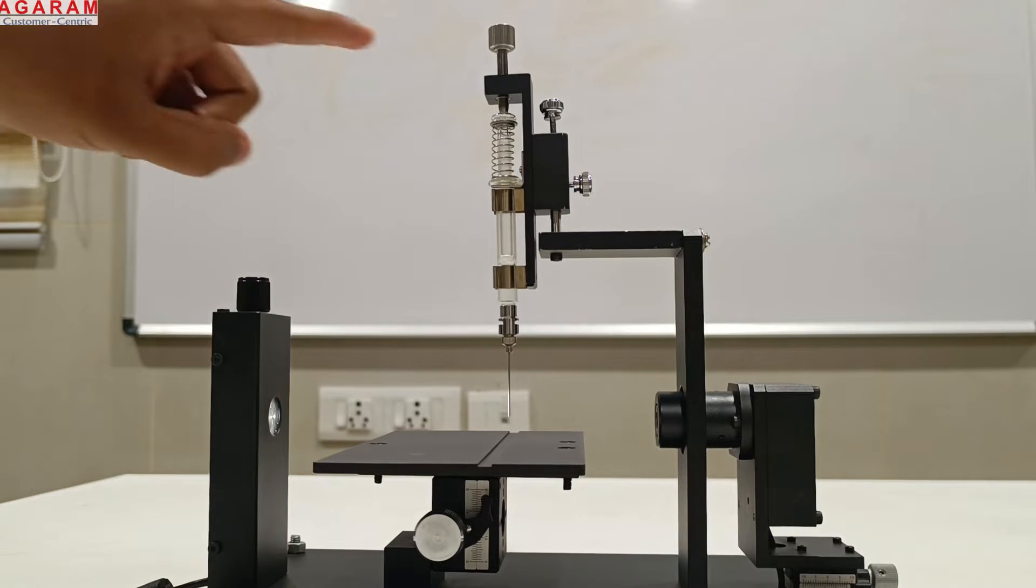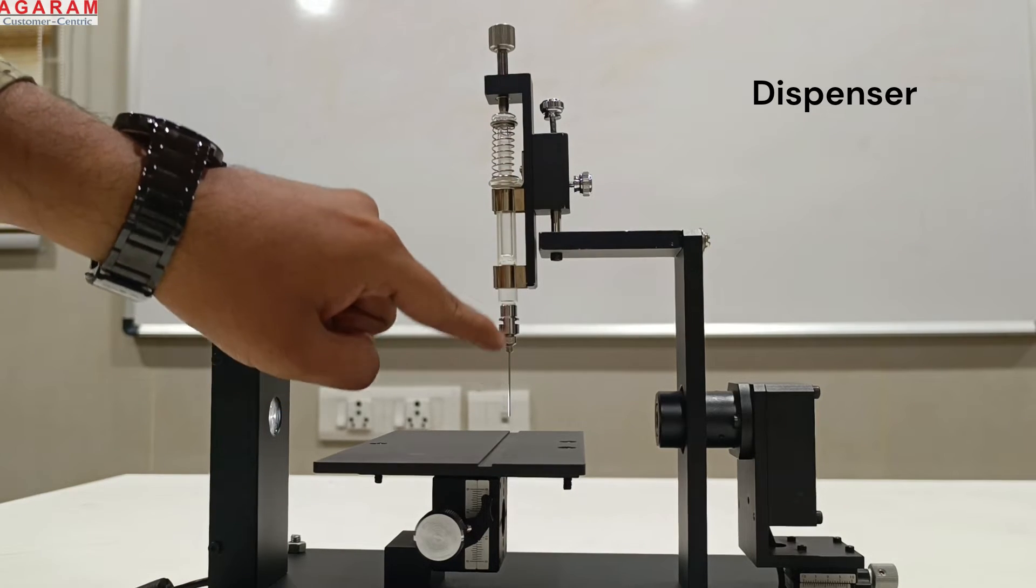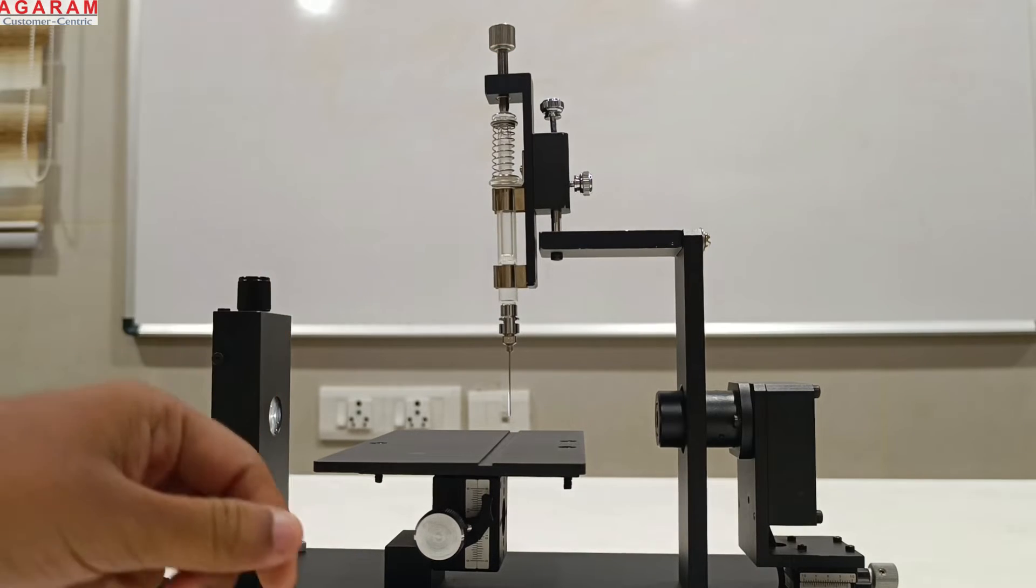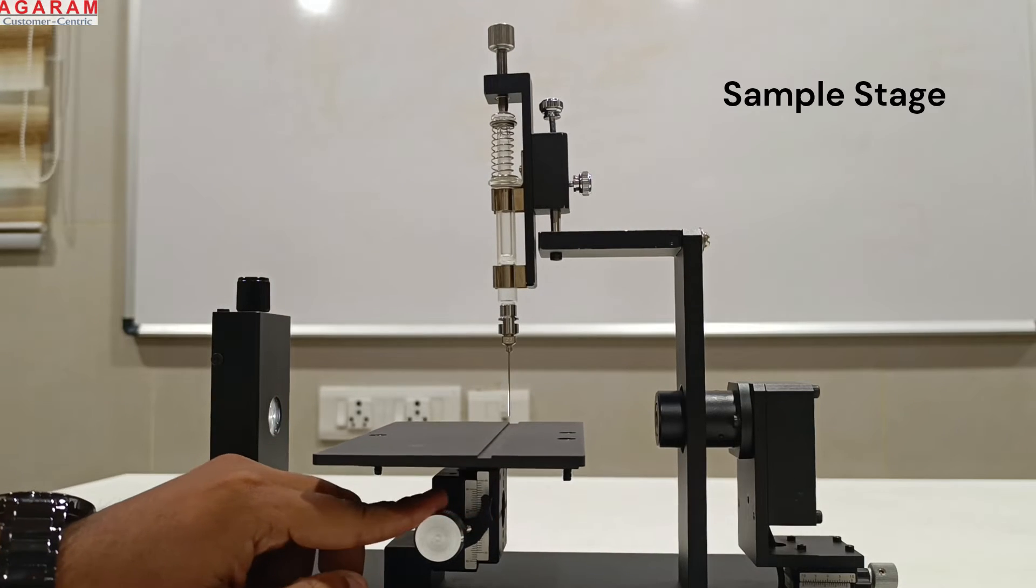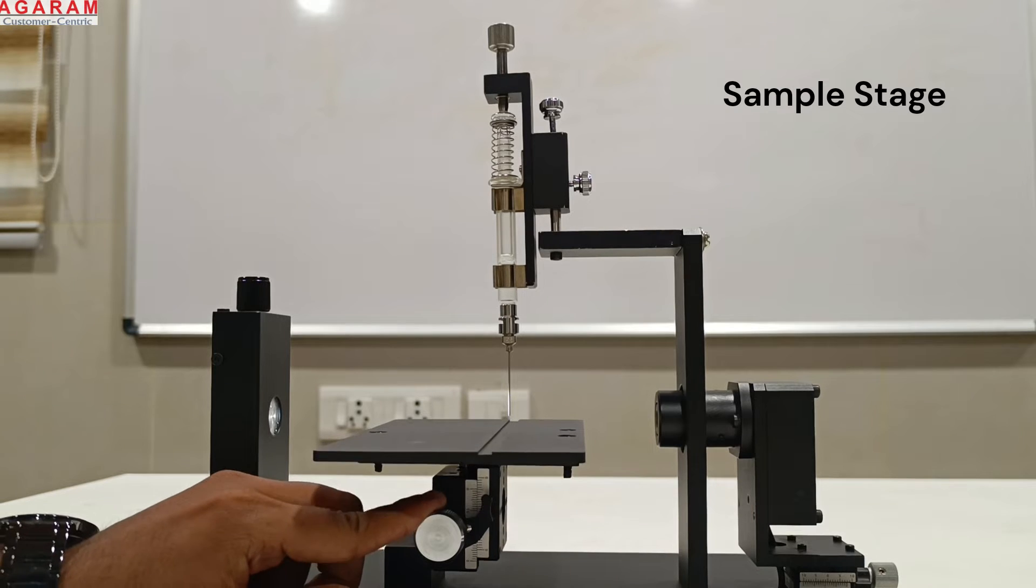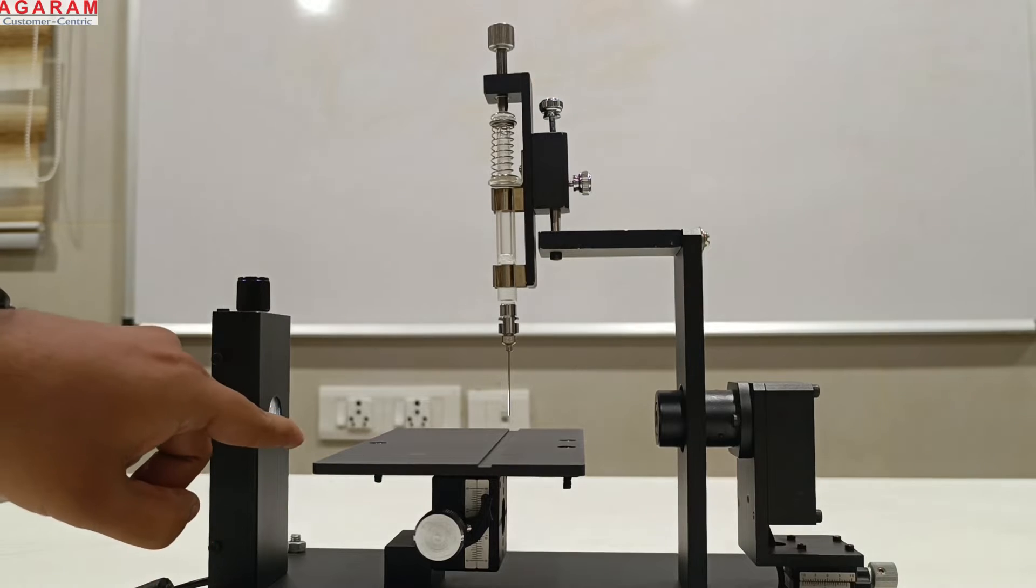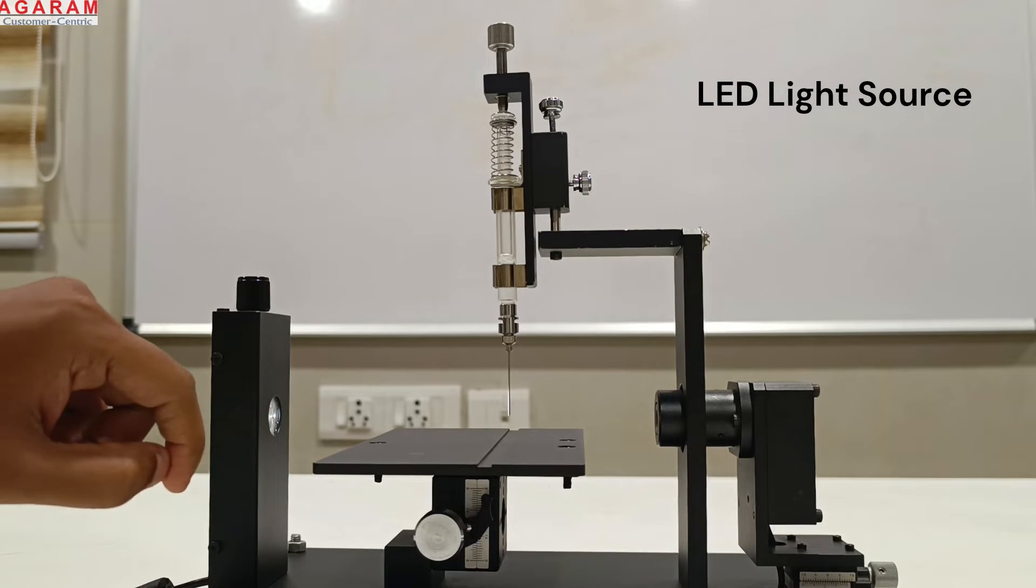The key components in this device are a liquid dispenser with needle, a sample stage that can move in z-axis, high-speed camera to capture the droplet behavior, and LED light for camera background.